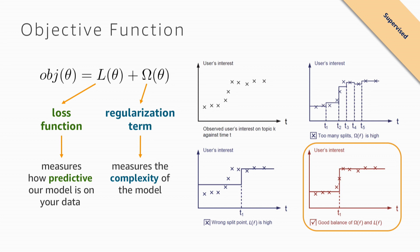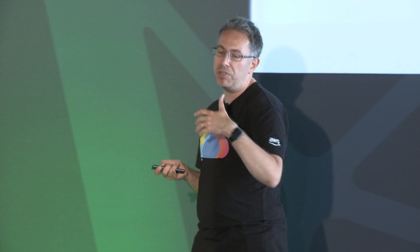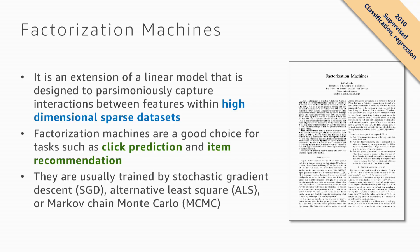Once we have the objective function, the idea is to minimize it. We use gradients — the extension in multiple dimensions of the derivative concept. Even when the function has hundreds of dimensions, we take the gradient, go in the opposite direction, and try to find a global minimum, minimizing both the error and the regularization term.